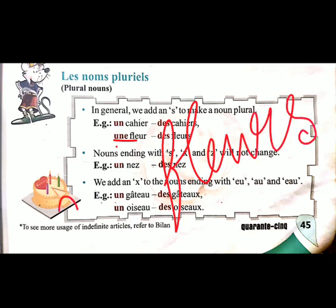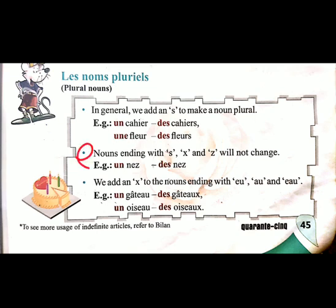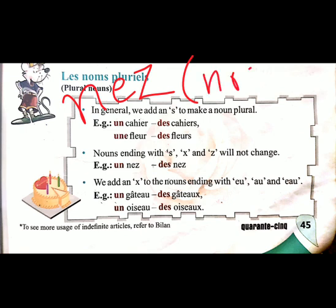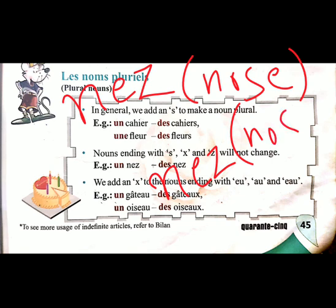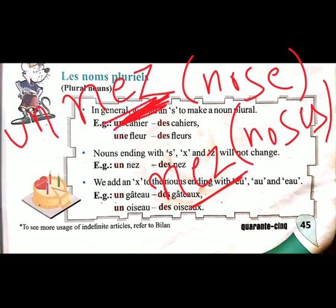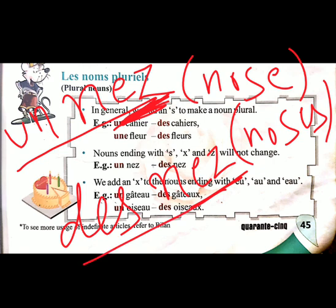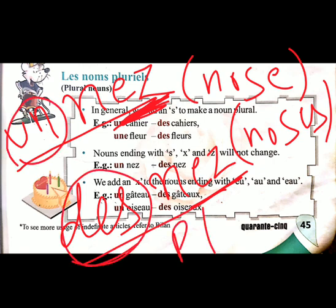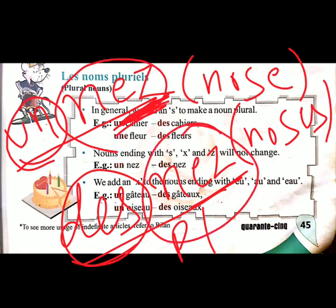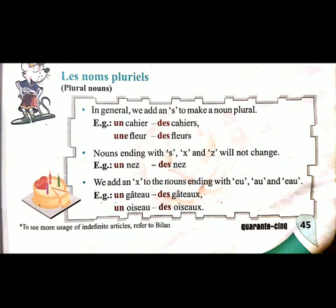Rule two: nouns ending with 's,' 'x,' or 'z' will not be changed in their plural form. For example, nez means nose. If you want to say noses, it is still nez — it does not change. So how do you know if it is singular or plural? Very simple: if there is un before nez it is singular; if there is des before nez it is plural. The article tells you the number.